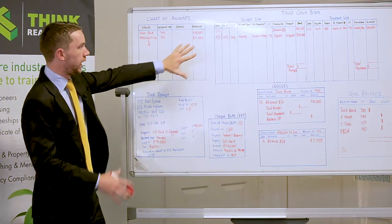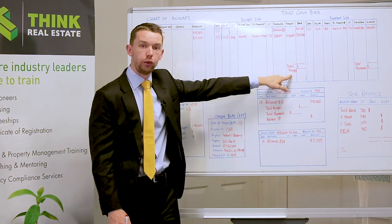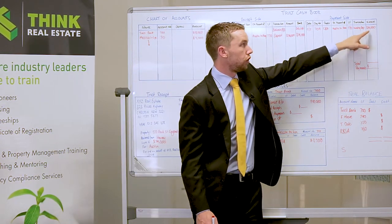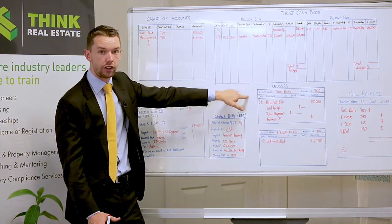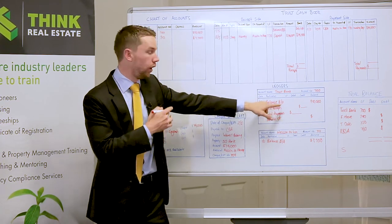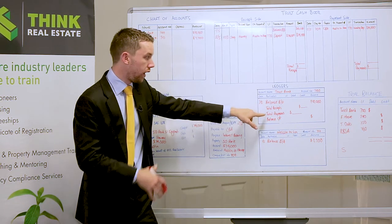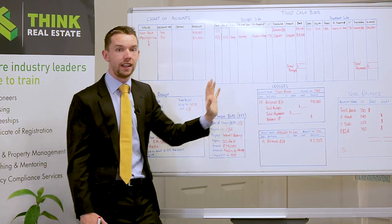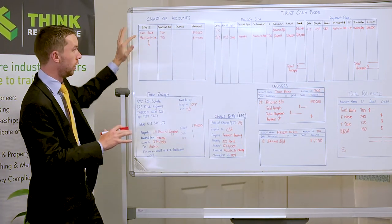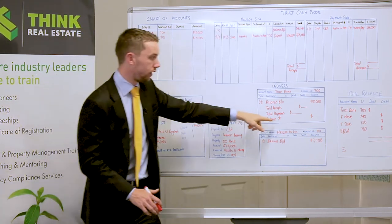Add up all the deposits and all the payments and put totals at the bottom of those columns. Then we create a trial balance — we list all the ledger cards that we still hold money for. Accounts that have ended up with a balance of nil we won't list; only the ones where we hold money. We add all the receipt side totals and all the payment side totals and put those figures into our trust bank ledger card. We take our balance brought down from the previous month, add all total receipts, subtract all total payments, and arrive at a balance carried forward — which will carry into the next month.